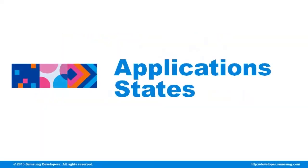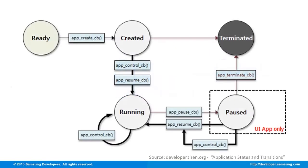The flow of our application is determined by the callbacks, which are responsible for changes in state. Every application starts with a request from the user to be launched. It can be either from the launcher or initiated by another application.